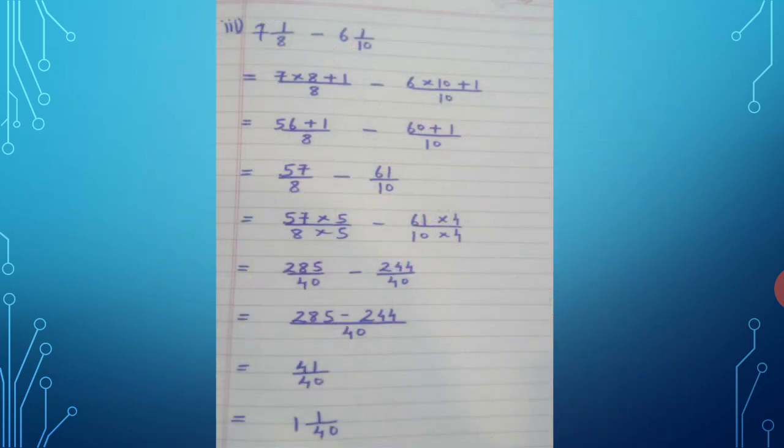Third sum: 7 and 1 upon 8 minus 6 and 1 upon 10. Convert: 7 × 8 + 1 upon 8, minus 6 × 10 + 1 upon 10. This equals 56 + 1 upon 8, minus 60 + 1 upon 10, giving 57 upon 8 minus 61 upon 10.